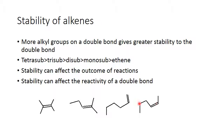This is 1-hexene and this is 2-hexene. The double bond in 2-hexene has two alkyl groups on it — a methyl and a propyl. This is 2-methyl-2-pentene, and this double bond has three groups on it. And this compound is 2,3-dimethyl-2-butene. Each carbon of the double bond has two groups on it, so there are four alkyl groups on this double bond. So we have one, two, three, and four alkyl groups respectively.